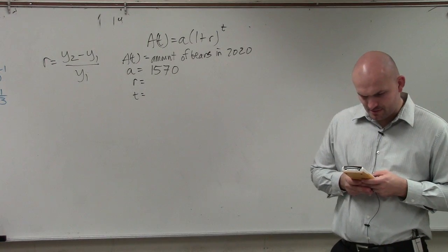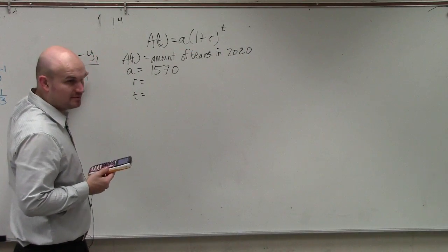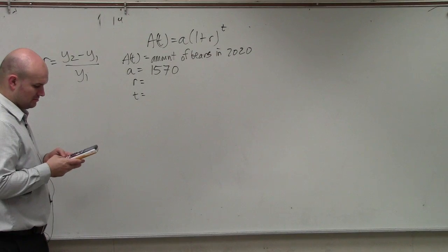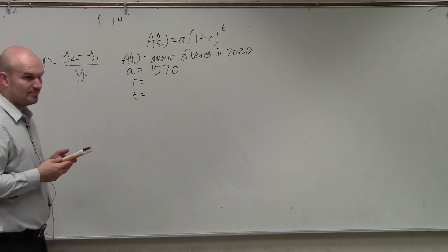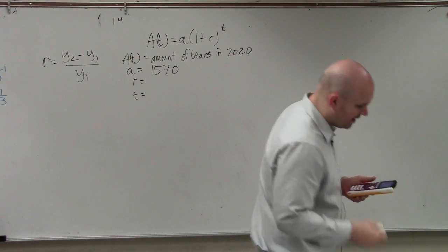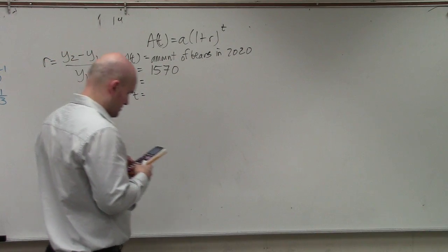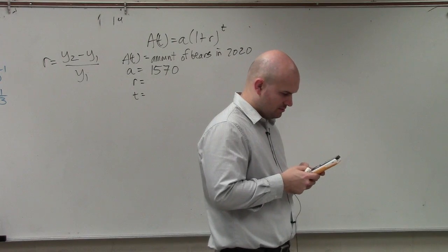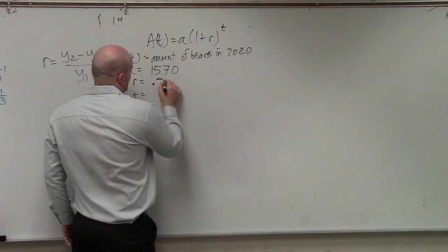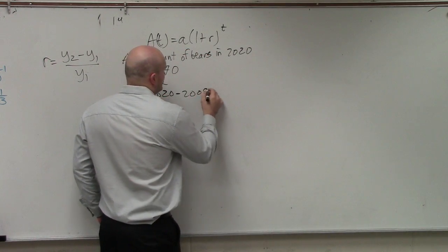Y2 minus Y1 is 314. Divide that by 1,570, and I'm getting 0.2. So the rate is 0.2, which is 20%. And T is going to be how long — 2020 minus 2009, which is your initial year. This is my ending year, this is my initial year.